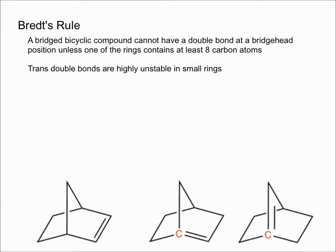To begin with, Bredt's Rule is essentially a rule in organic chemistry that says a bridged bicyclic compound cannot have a double bond at the bridgehead position unless one of the rings contains at least eight carbons.